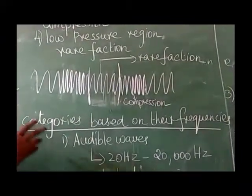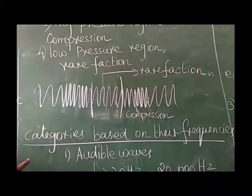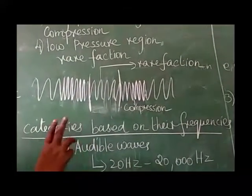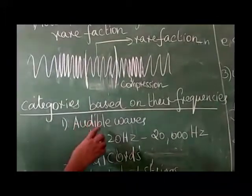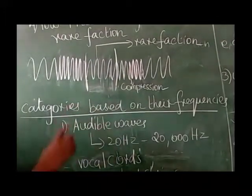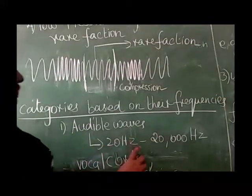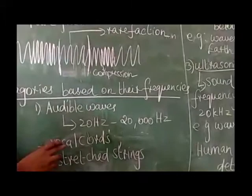The categories based on the frequency. The sound waves, I have taught, are longitudinal waves. We have divided the sound waves according to the frequency. They are divided into three headings. One is audible. What is the meaning of audible? Able to hear.